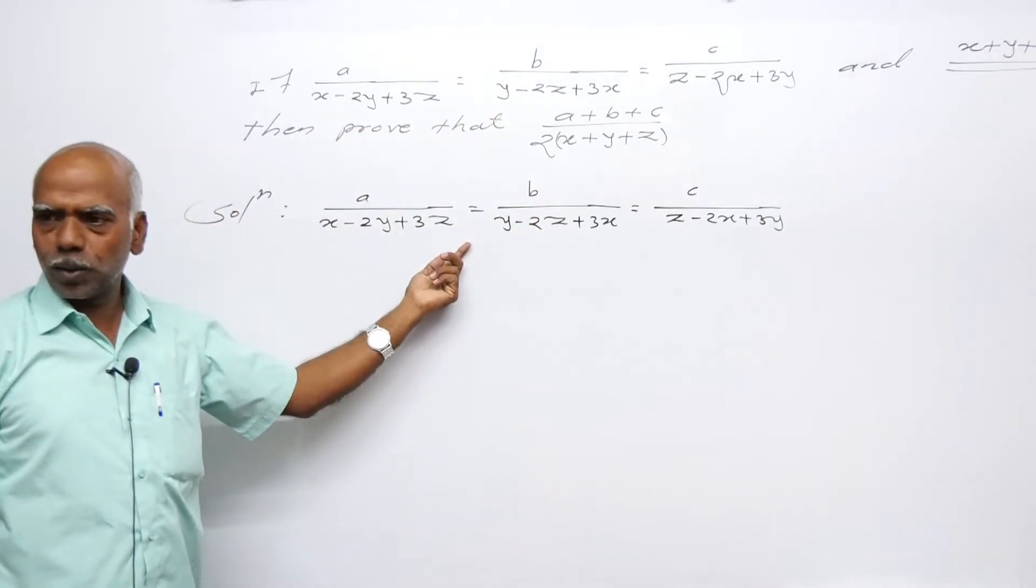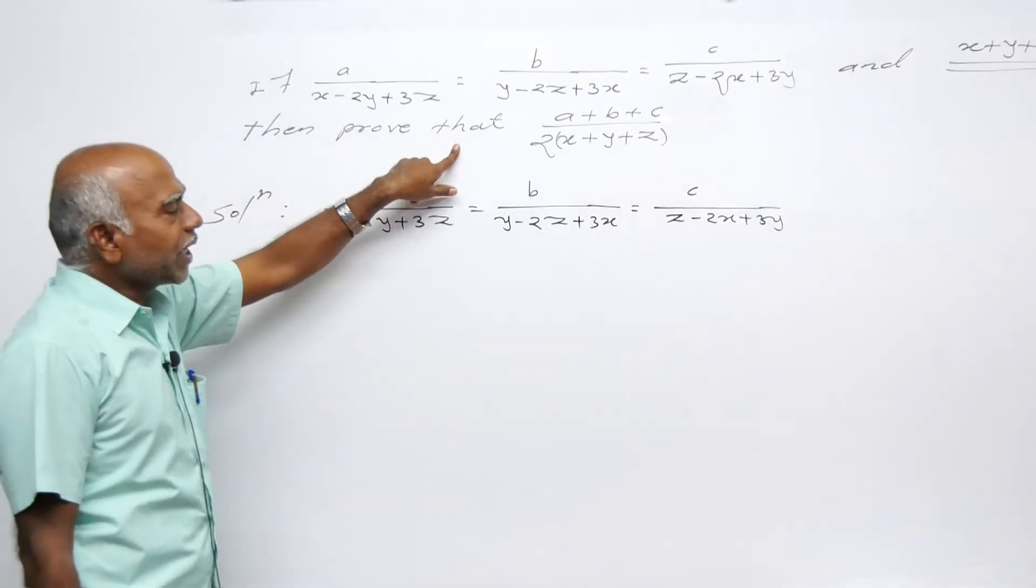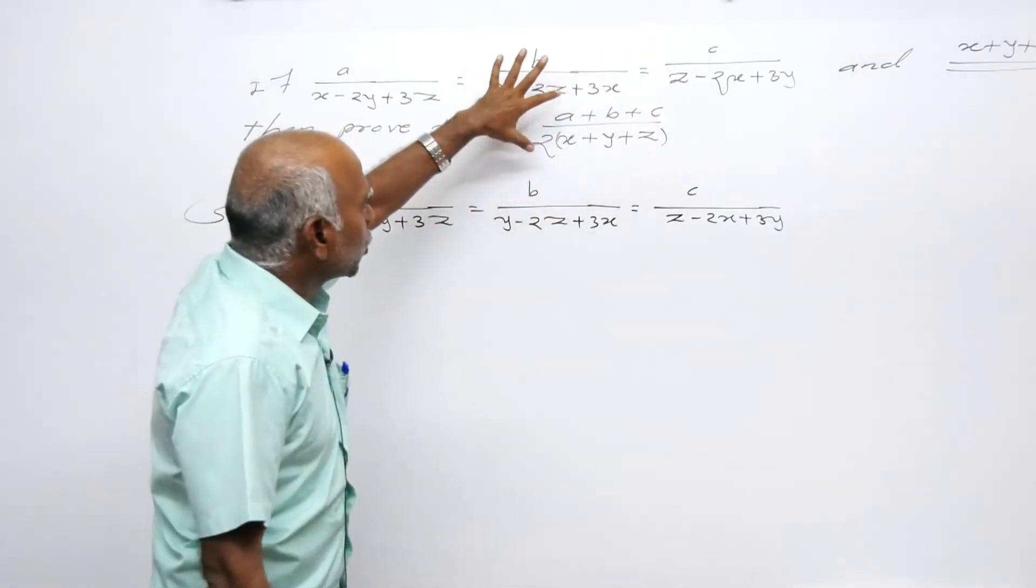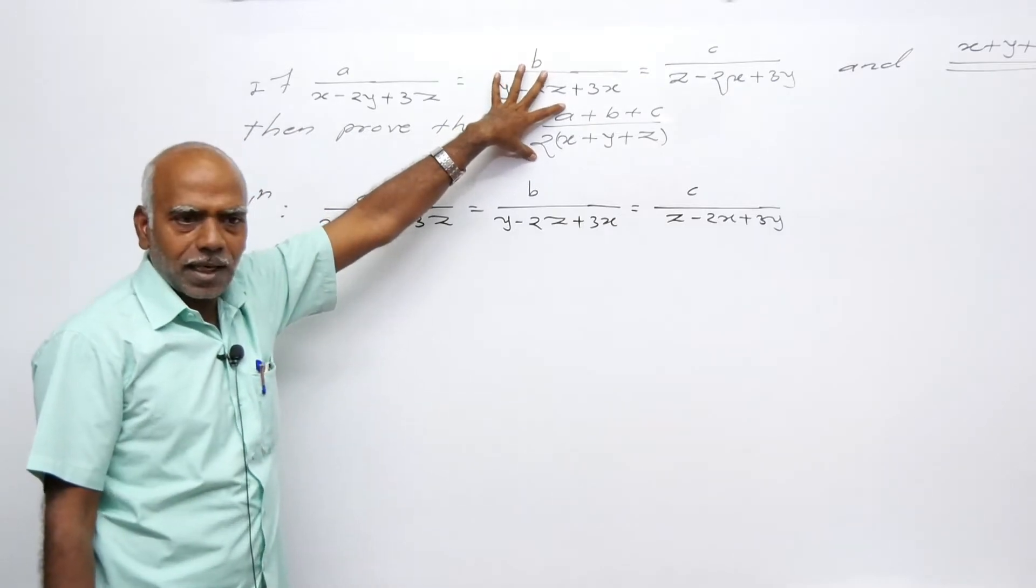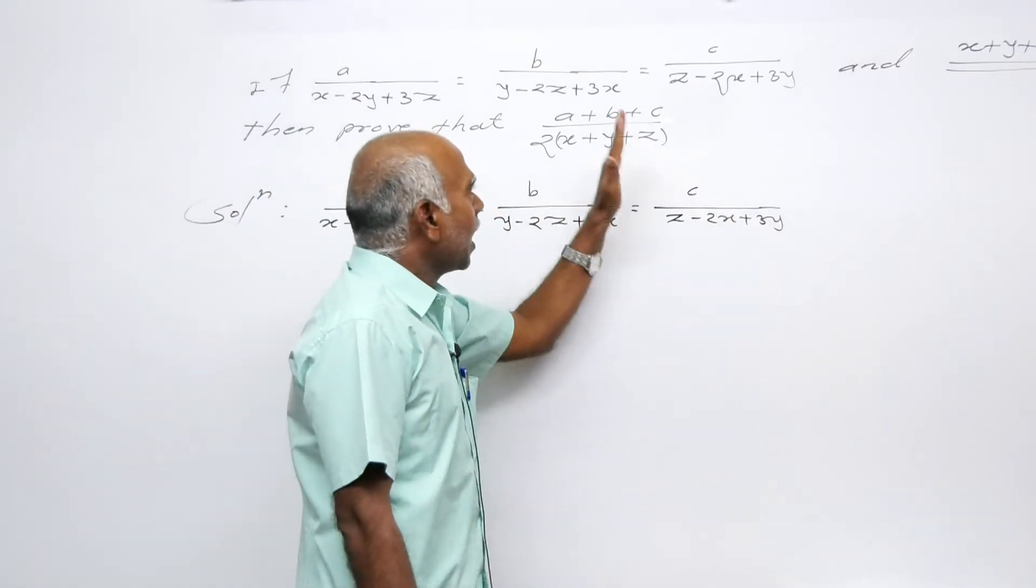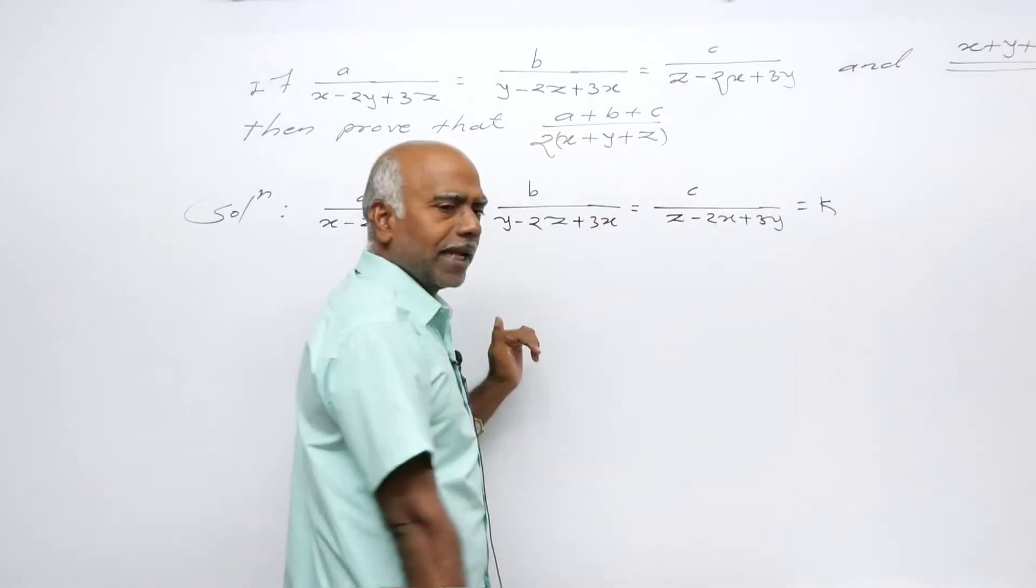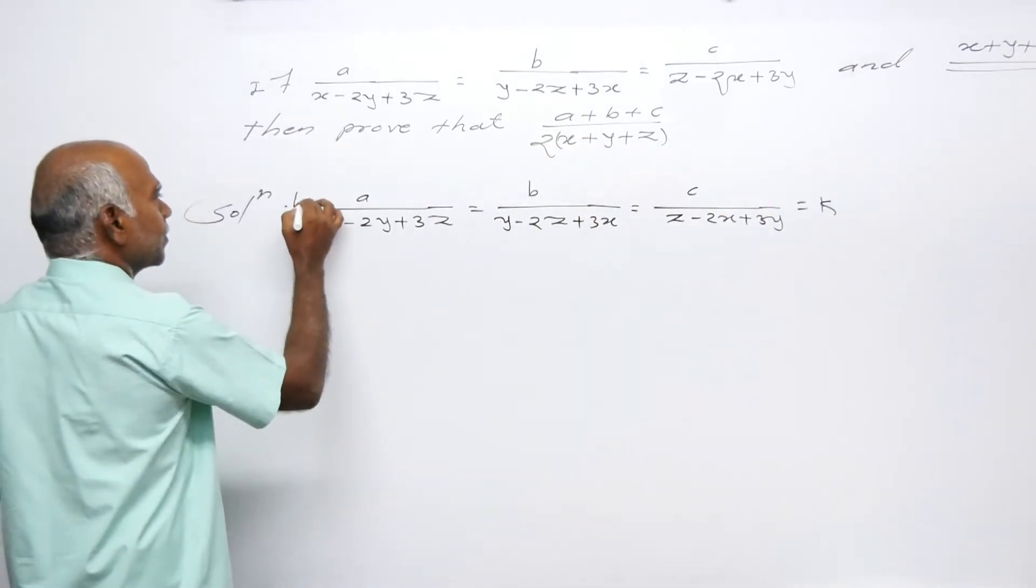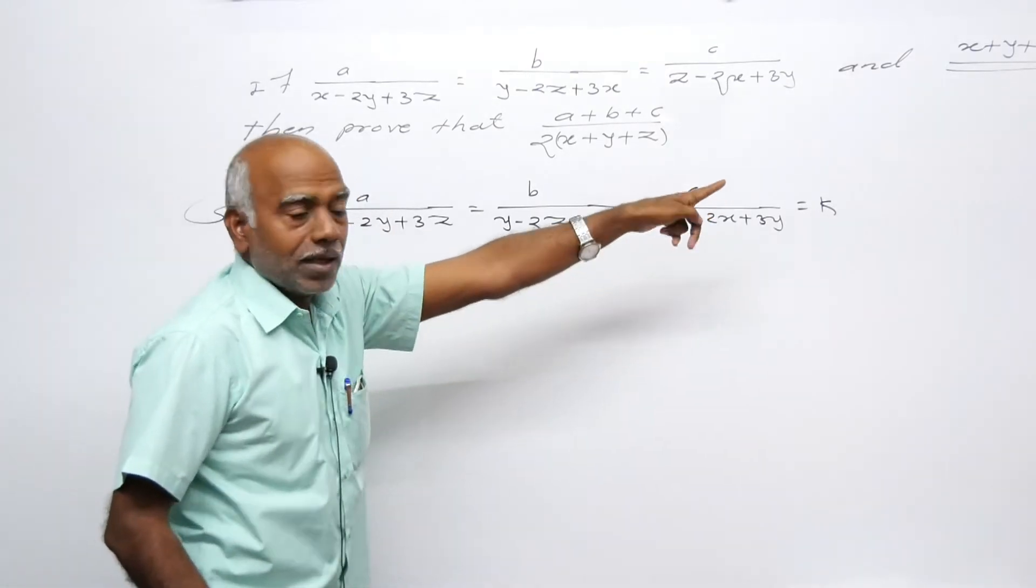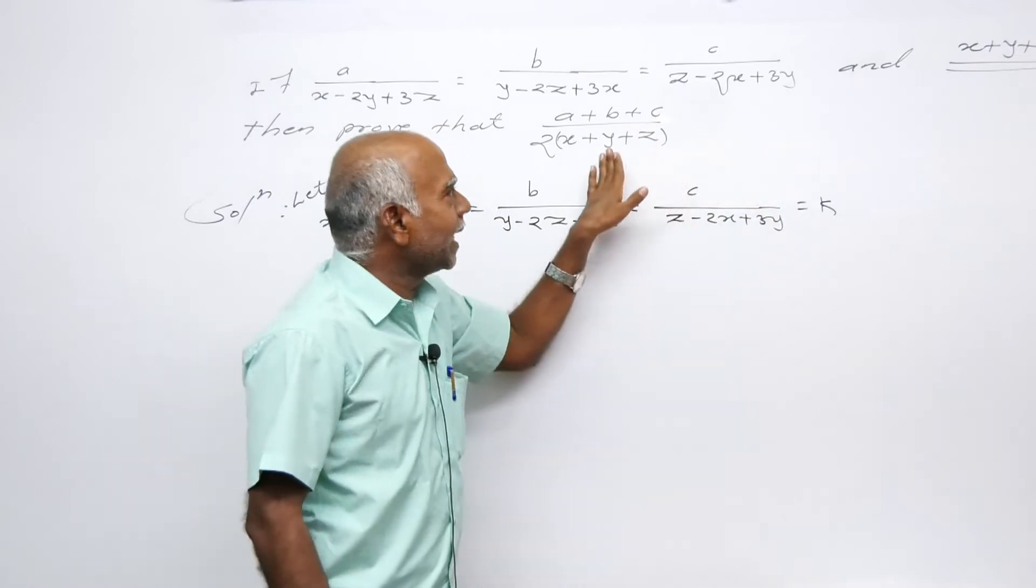We need to prove that each ratio - meaning each of these ratios - what value does this ratio equal? Each value should be equal to k.